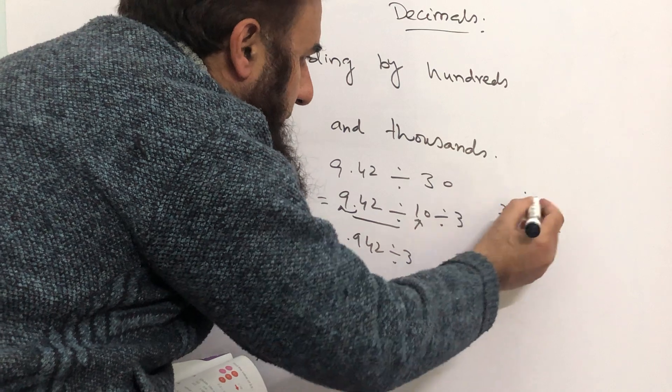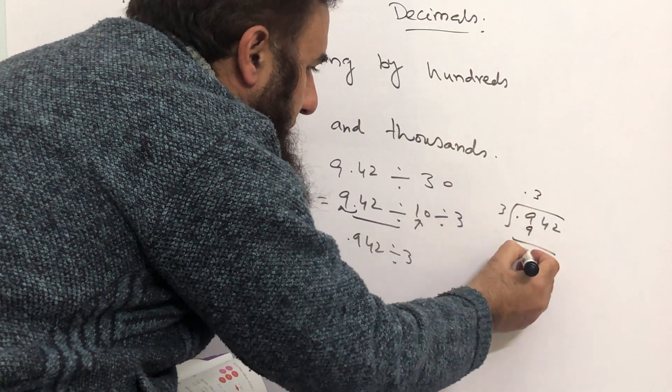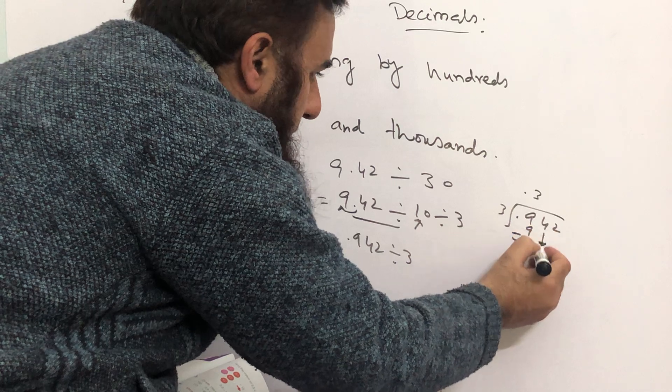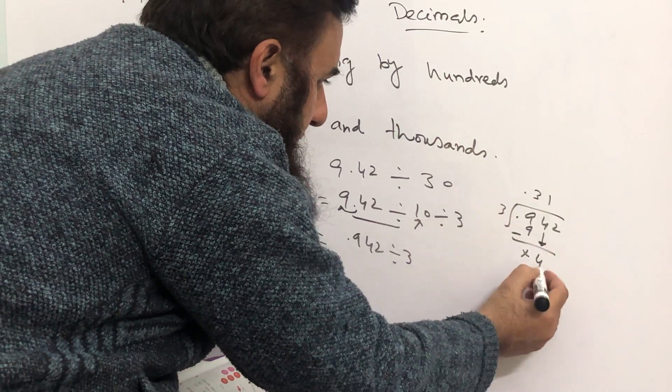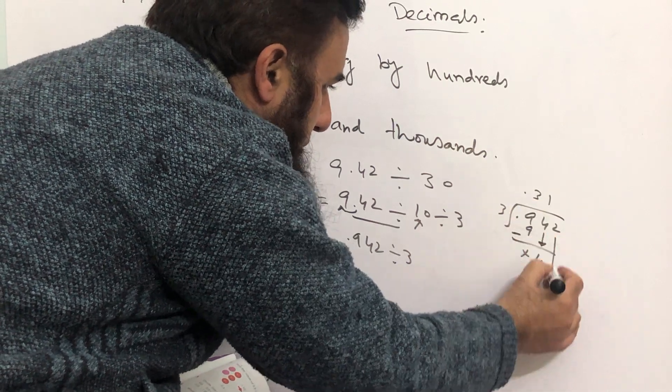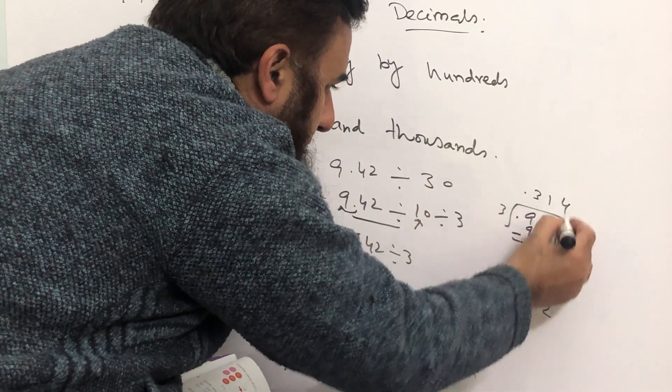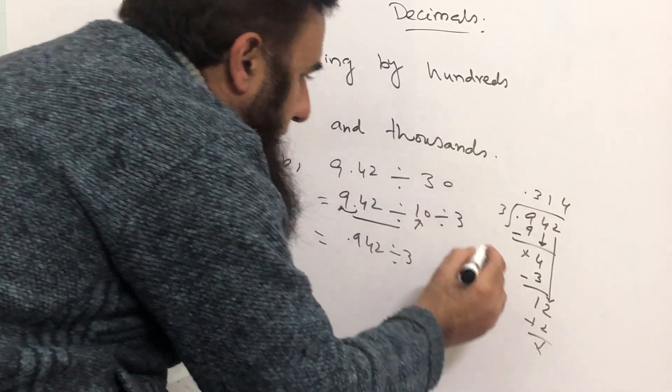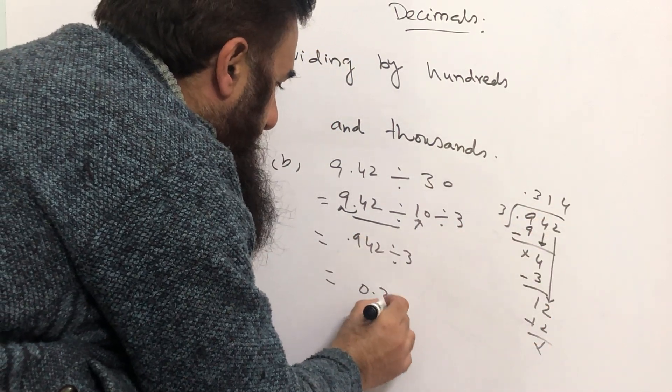Point will come here. 3 threes are 9 minus 0. This 4 comes here. 3 ones are 3, 4 minus 3 is 1. This 2 will come here. 3 fours are 12. So the answer is 0.314.